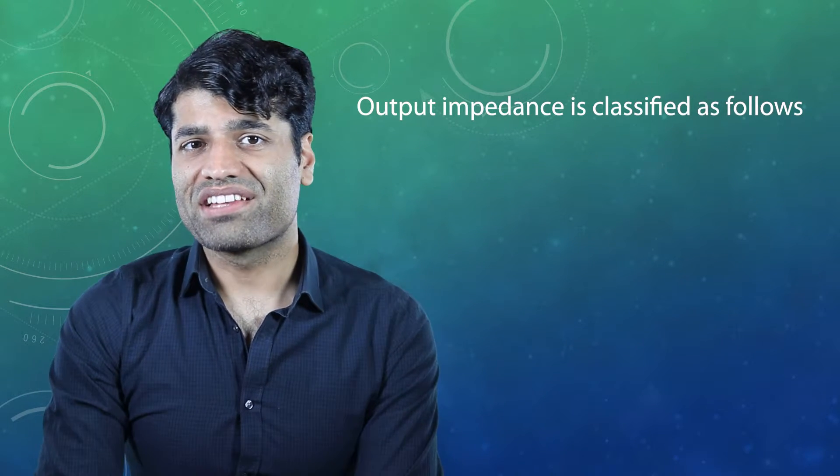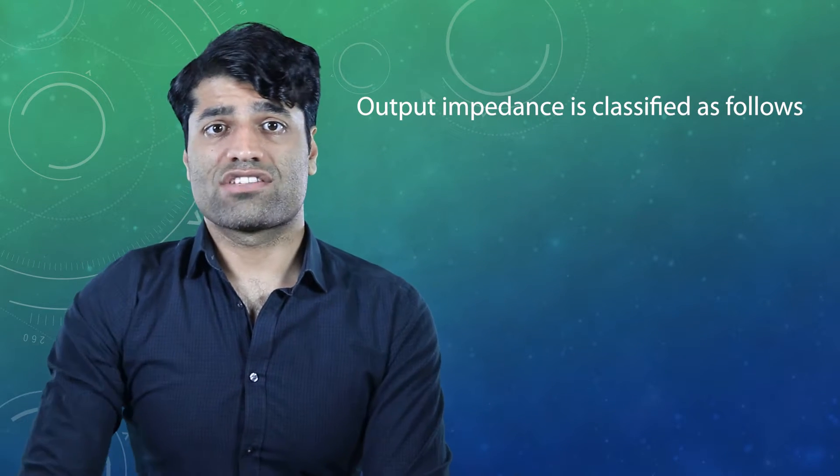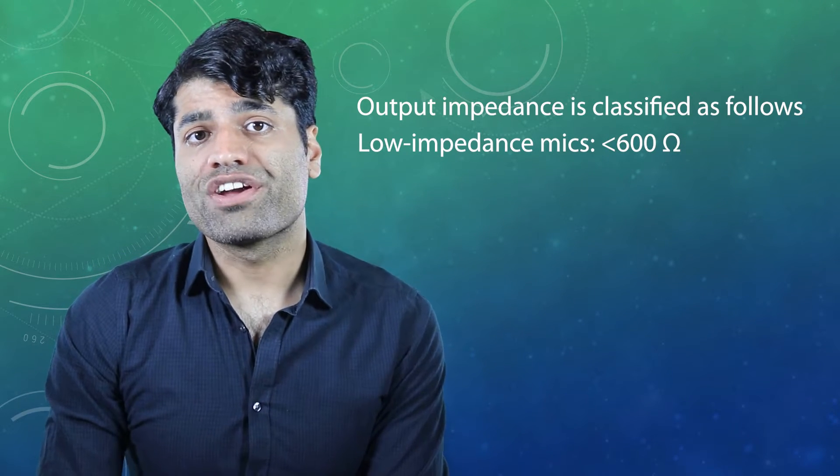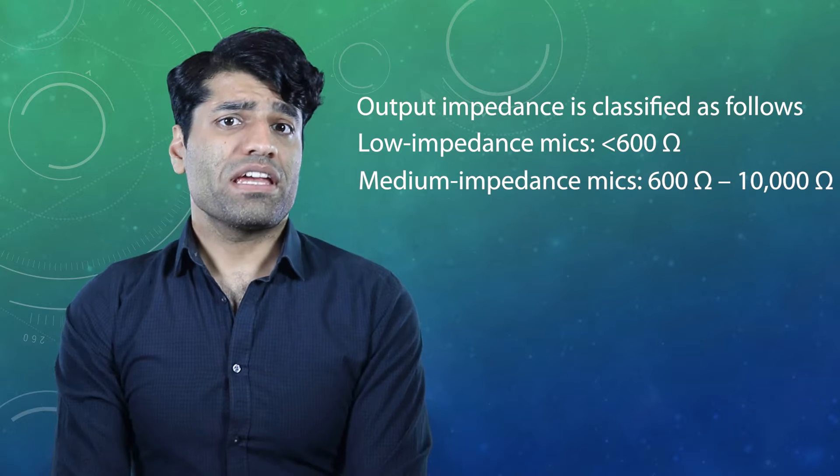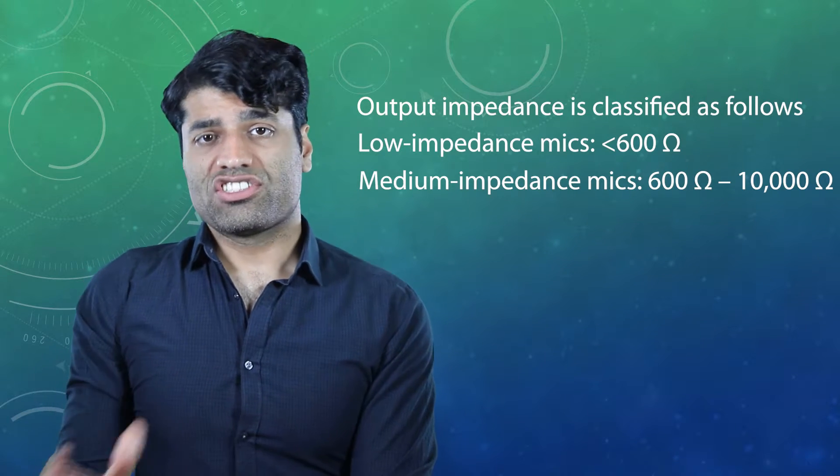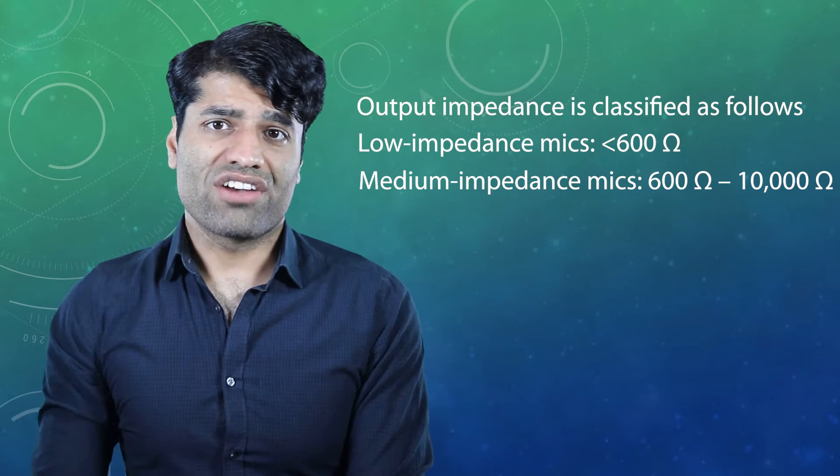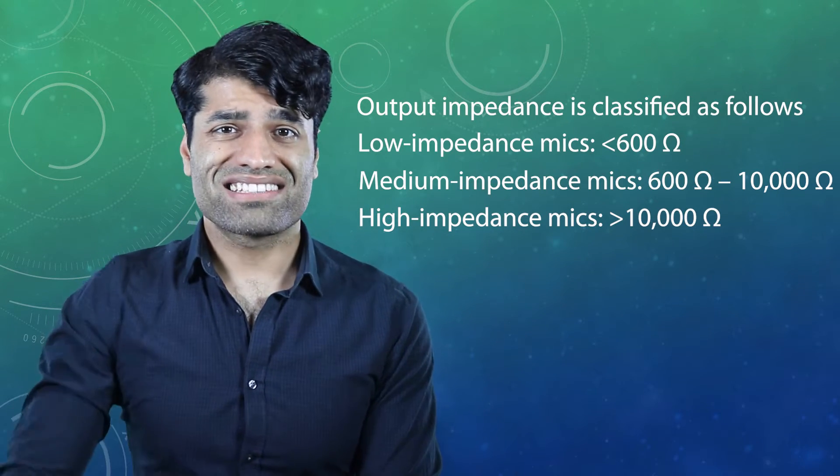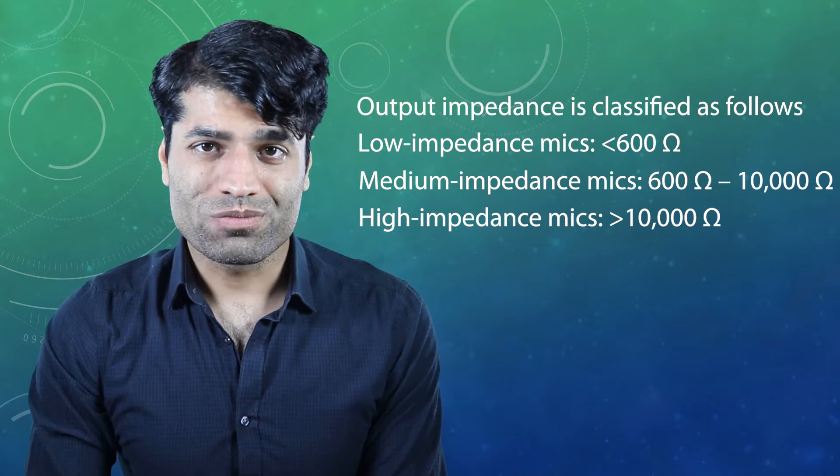Output impedance is classified as follows. Low impedance mics, less than 600 ohms, medium impedance mics, 600 ohms to 10,000 ohms. High impedance mics are greater than 10,000 ohms.